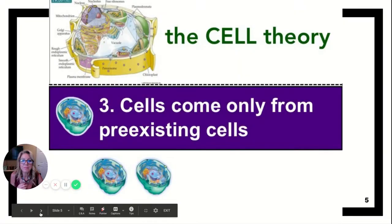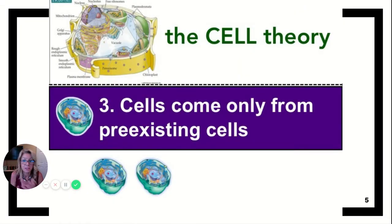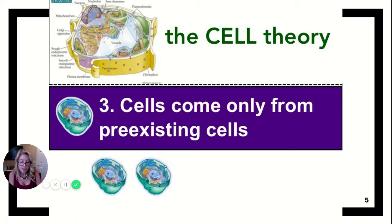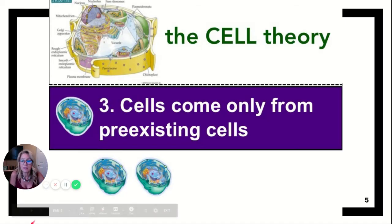The third part is that cells only come from pre-existing cells — that's the only way you can get them. So that cell has to replicate itself in some way, and we're going to talk about things like binary fission, mitosis, and meiosis. On your notes where it says the cell theory, fill that part in: all living things are composed of cells, and cells come from pre-existing cells.